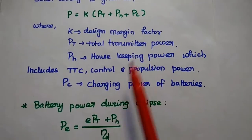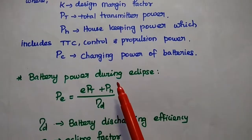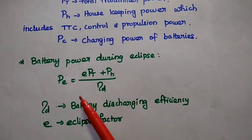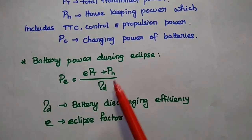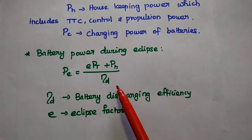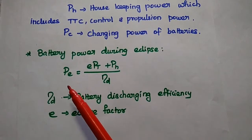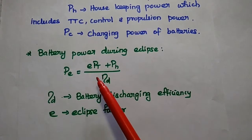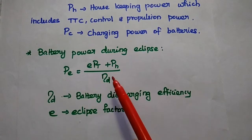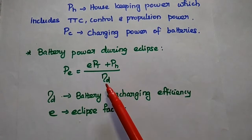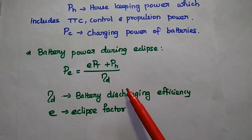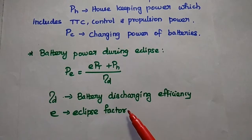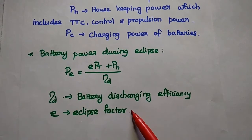The battery power during eclipse period is represented as: PE = E × (PT + PH) / ηD. Here, PE is the battery power during the eclipse period, E is the eclipse factor, and ηD is the battery discharging efficiency. E represents whether it is a full eclipse or half eclipse.